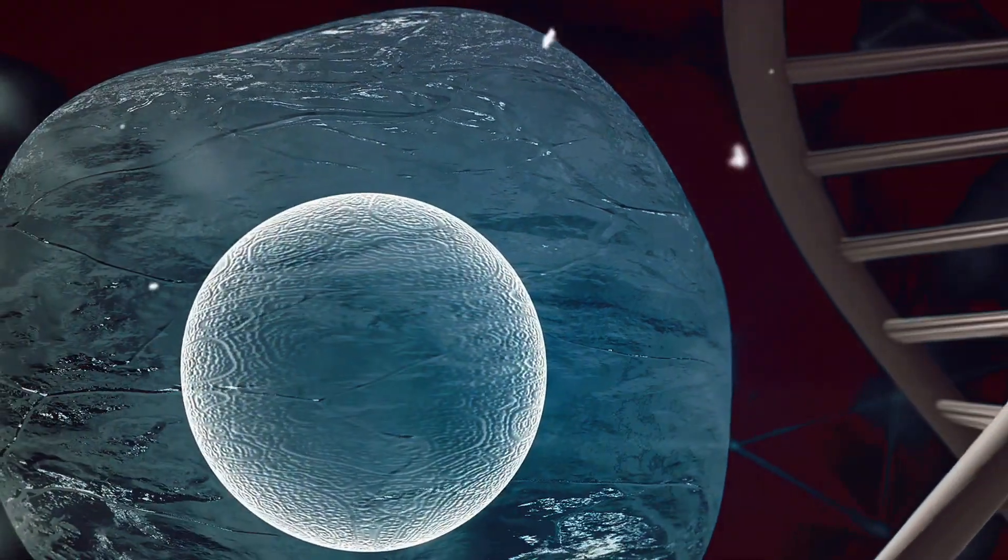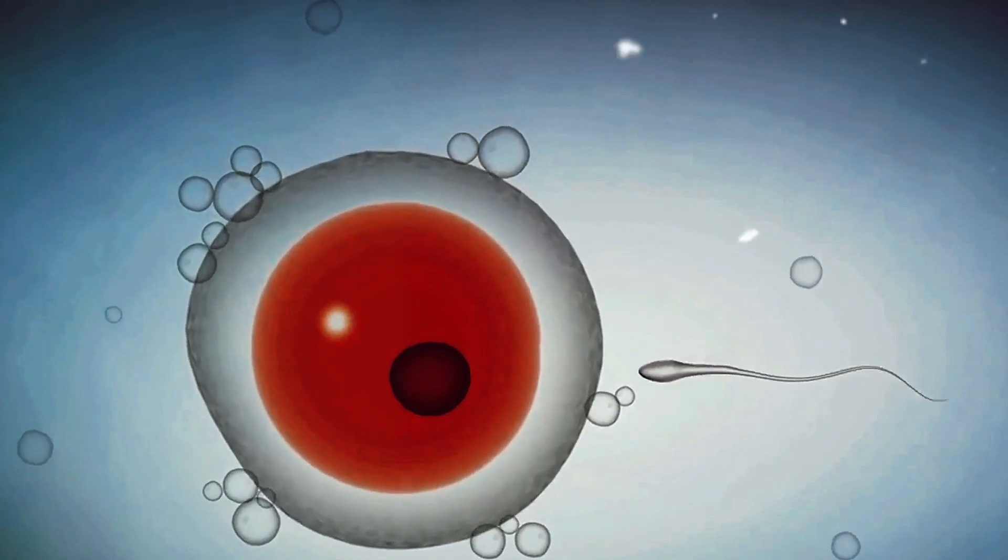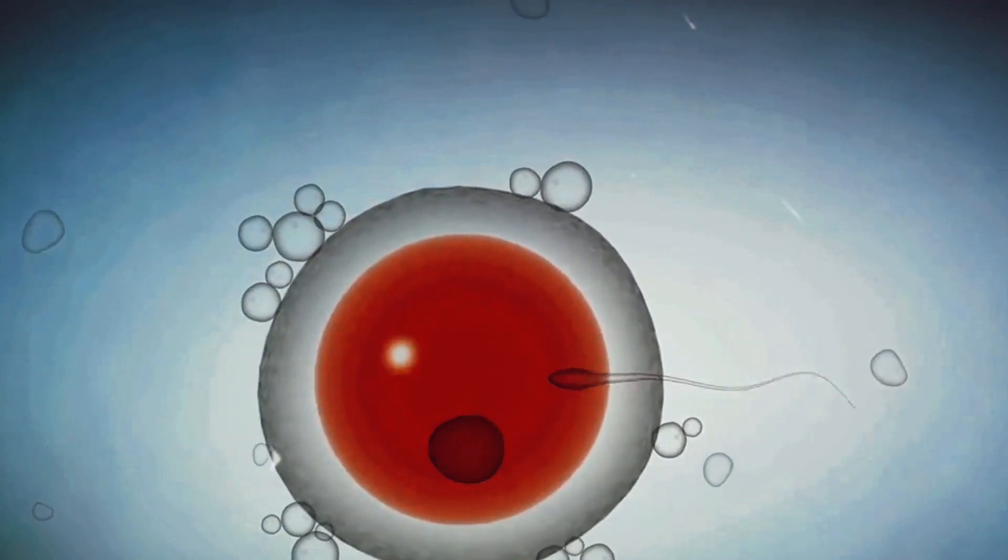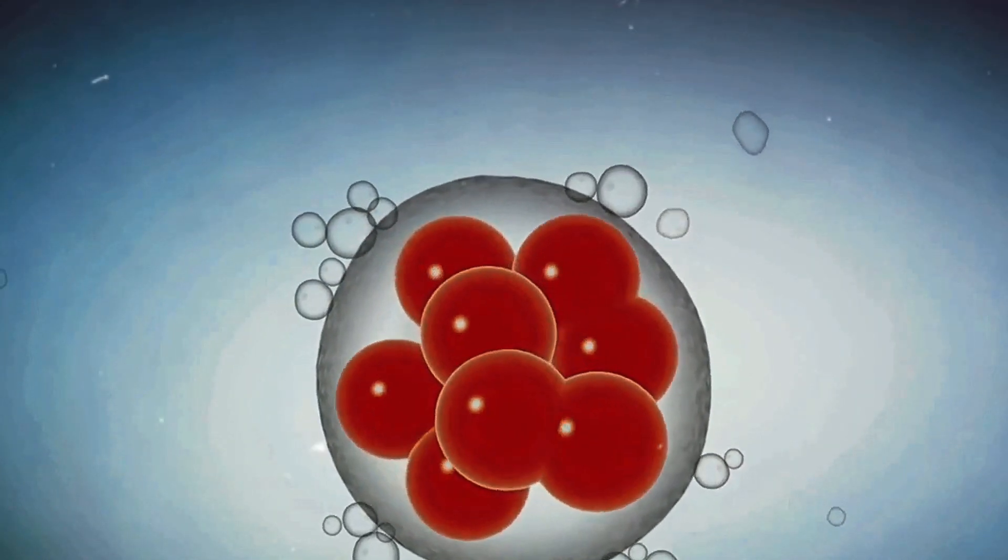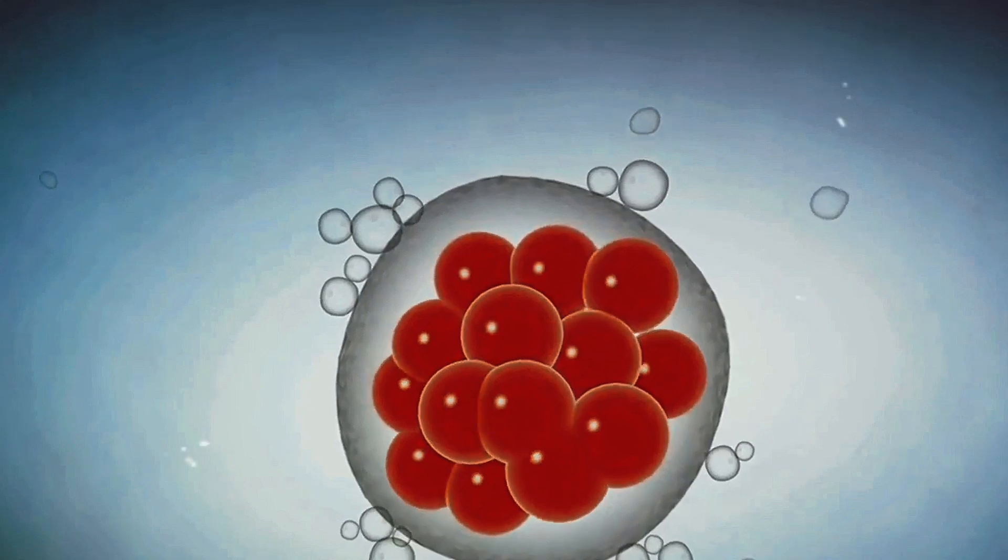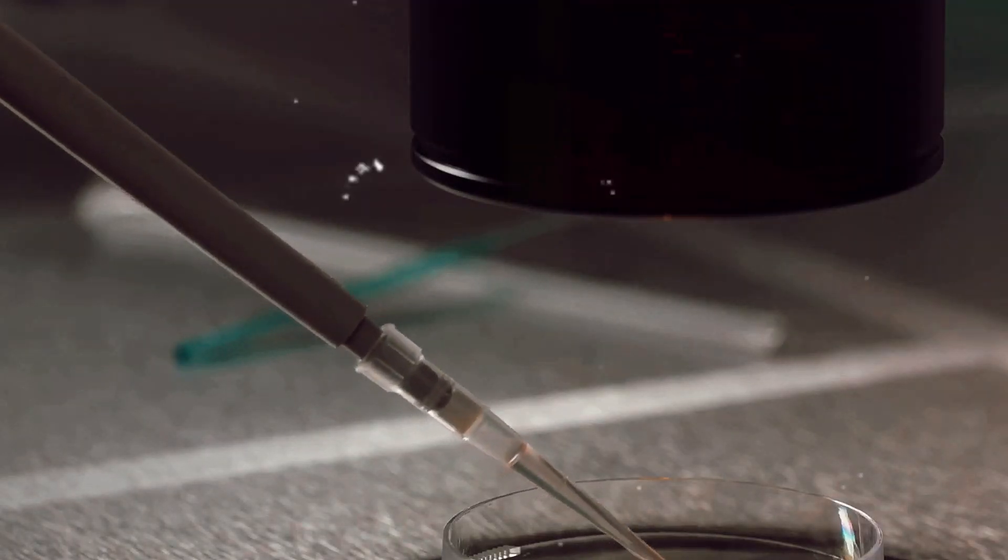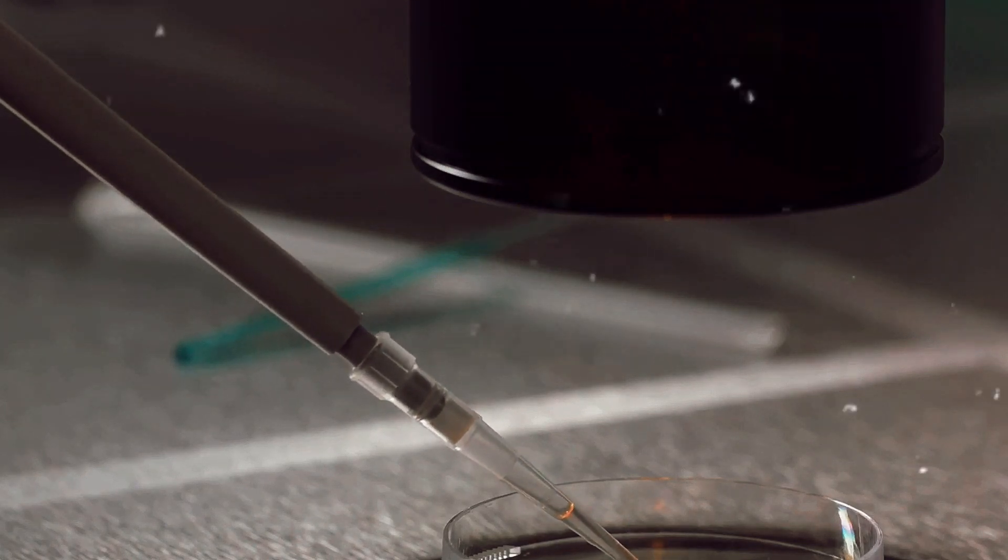By removing this, we essentially strip the egg cell of its original identity. It's like wiping a chalkboard clean before writing something new. This step is crucial because it prepares the cell to receive new genetic material from the donor cell. The process of removing the nucleus is delicate and requires sophisticated tools. This is one of the reasons why the cloning process is so complex and intriguing. With the egg cell now modified, it's ready for the next phase.